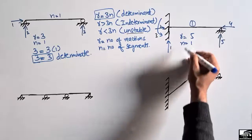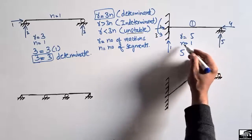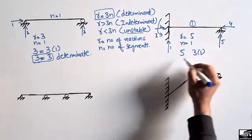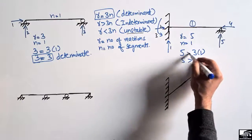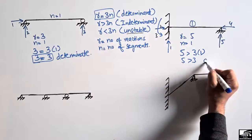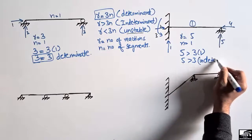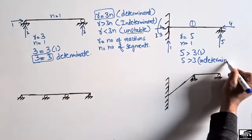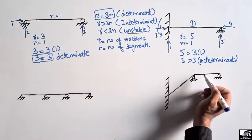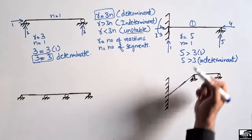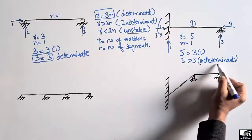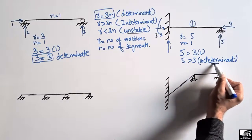Checking: R equals 5 and 3n equals 3 times 1, which is 3. Since 5 is greater than 3, this beam is an indeterminate beam. We cannot find the reactions using simple equilibrium equations; we must use other methods to determine the support reactions.